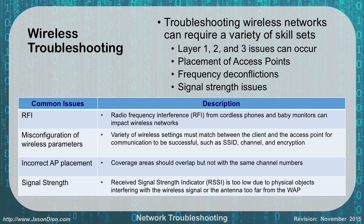Wireless troubleshooting involves looking at layer 1, 2, and 3 issues since layer 1 is the radio frequency itself. Issues include access point placement, frequency conflicts, and signal strength. Radio frequency interference can come from baby monitors, cordless phones, and microwave ovens. If using 2.4 GHz there is a lot of competing traffic in that spectrum. Switching to 5 GHz by upgrading to N or AC networks can help, or you can pick a different channel to avoid interference. Wireless misconfiguration is also common — channel, SSID broadcast ID, and encryption must all match between the access point and client.